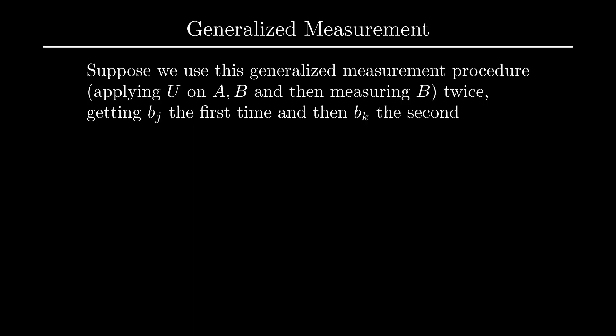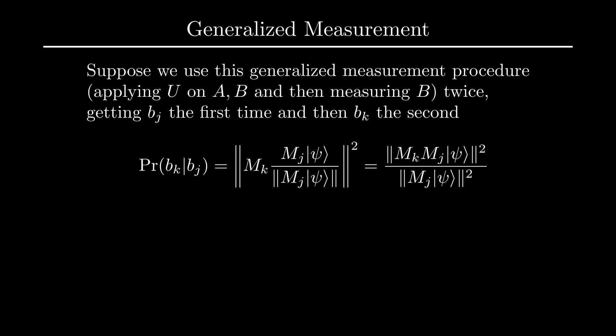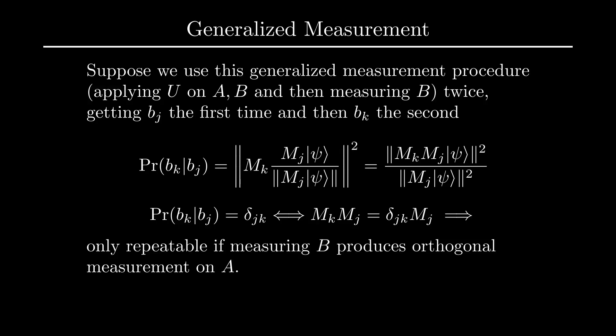Suppose we measure with respect to the B basis twice and we are interested in the conditional probability of measuring B_k the second time, given we measure B_j the first time. We can write this conditional probability as follows. The measurement is repeatable if and only if this probability is 1 when k equals j and 0 otherwise. However, this requires M_k M_j to be equal to the Kronecker delta of j and k times M_j up to a phase, meaning that the measurements must be orthogonal.